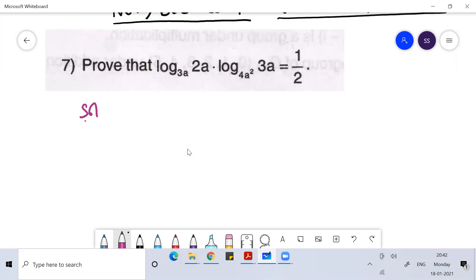If I write this question, this is log base 3A of 2A times log base 4A squared of 3A equal to 1 by 2. Okay, so this is the problem.